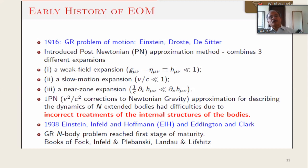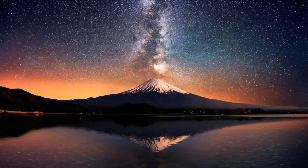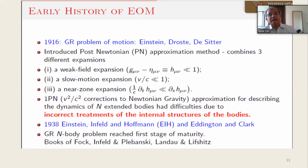More critically, this involves assuming a weak field expansion, assuming the body is moving slowly, and doing a near-zone expansion where retardation effects are small. Even though test particle motion could be easily done, obtaining corrections beyond Newtonian gravity for extended bodies was very difficult due to complications from internal structures in general relativity. It was only in 1938, in the work of Einstein, Infeld, and Hoffmann, that this problem found its first solution, with treatments available in the books of Fock, Infeld and Plebanski, and Landau-Lifshitz.